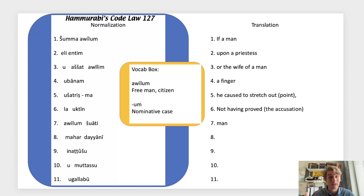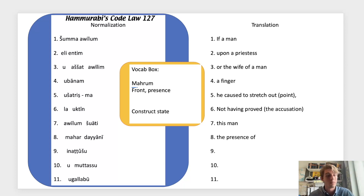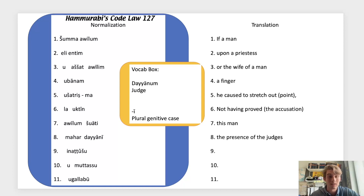Line seven: awīlam again, 'free man or citizen,' and here in the accusative case. Then šuāti, a pronoun meaning 'him,' 'her,' 'that,' or 'the same' — a demonstrative pronoun, so 'this man.' Next we have mahar, from maḫrum, in the construct state, so no case ending; because of the doubling of the R before the case ending, we add an A to get mahar. Then dayyānim — 'judges' — in the plural genitive case, showing connection to the construct state mahar and giving us 'before the judges.'